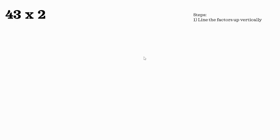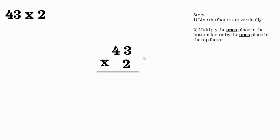Now let's try 43 times 2. First we're going to line the factors up vertically, which means one on top of the other. Make sure to line up the ones place. Next we're going to multiply the ones place in the bottom factor by the ones place in the top factor. So the 2 is in the ones place in the bottom factor and the 3 is in the ones place in the top factor. 2 ones times 3 ones equals 6 ones, which is why the 6 is in the ones place.